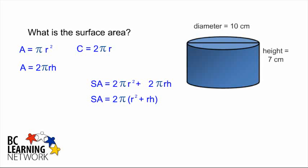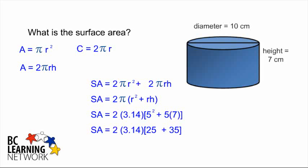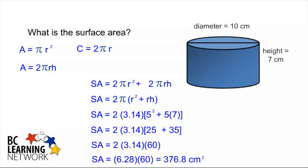Now all we need to do is plug in our values for those variables. 2 times 3.14 for pi, and then in brackets, r squared or 5 squared, plus r times h, 5 times 7. First we evaluate what's in the brackets. 2 times 3.14 times 25 plus 35, which is 60, and multiply that out to 376.8 centimeters squared.